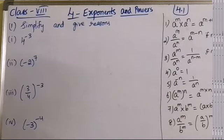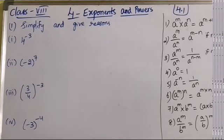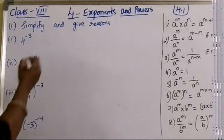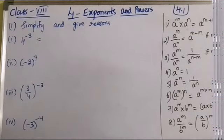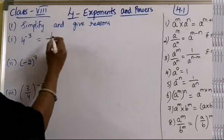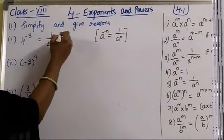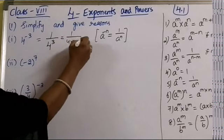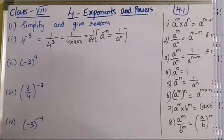First question: simplify and give reasons. Here we have to solve the question, and for the reason, write which law you are using. In the first one, 4 to the power of minus 3. The power is negative, so we use Law 5: a^(-n) = 1/a^n. So I write 1/4³ = 1/(4×4×4) = 1/64. The answer is 1/64.